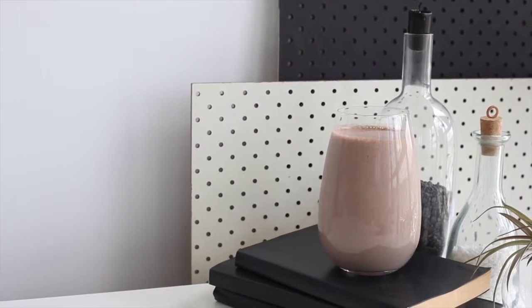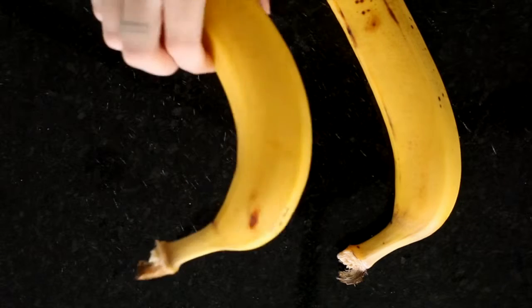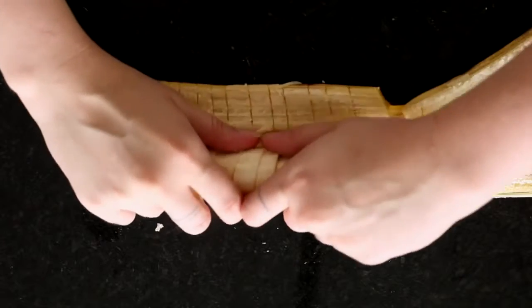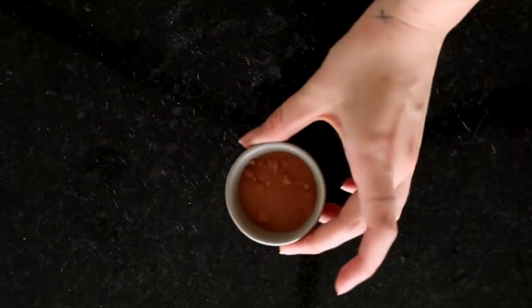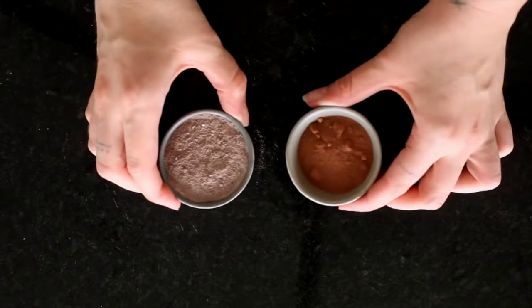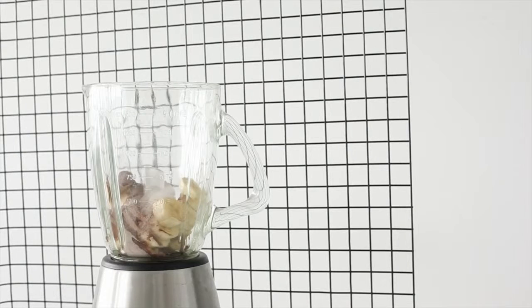First up we're making a double choc protein smoothie. Grab two bananas, two teaspoons of cacao powder, a scoop of chocolate protein and some ice, and then you're going to pop that into a blender with some almond milk.